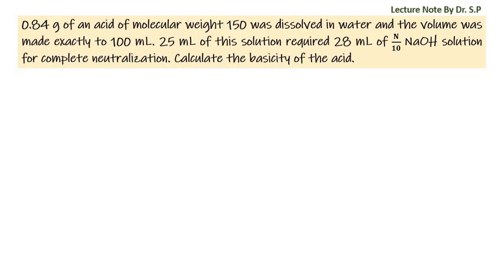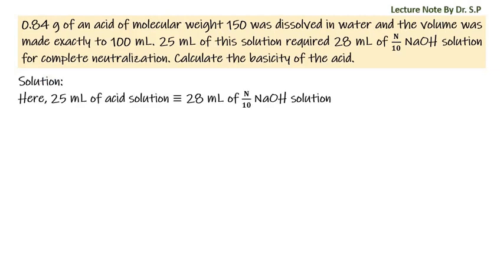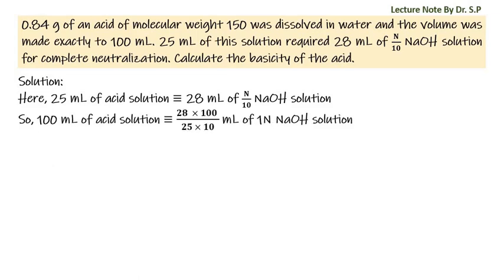Solution: Here, 25 milliliter of acid solution is similar to 28 milliliter of N by 10 NaOH solution. So 100 milliliter of acid solution is similar to 28 into 100 by 25 into 10 milliliter of 1N NaOH solution, that is similar to 11.2 milliliter of 1N NaOH solution.